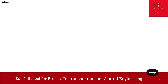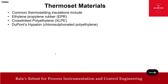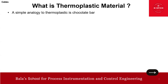Common thermosetting insulations include: ethylene propylene rubber (EPR), cross-linked polyethylene (XLPE), DuPont's chlorosulfonated polyethylene (Hypalon), nitrile or butadiene nitrile rubber (NBR), styrene butadiene rubber (SBR), and silicone rubber. Just to remember two key points: XLPE is thermoset; PVC is thermoplastic. That distinction is good enough.